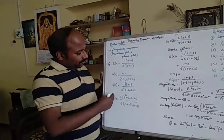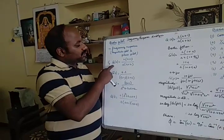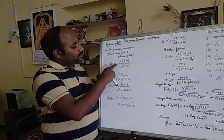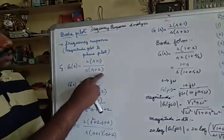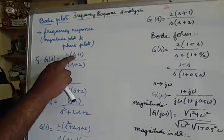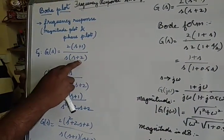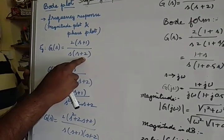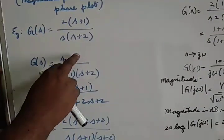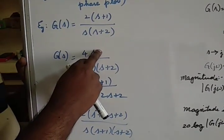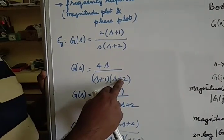We know some examples of an open loop transfer function G(s). G(s) is equal to 2 into (s+1) divided by s into (s+2). What are the things available here? We have a zero at minus 1, a pole at 0, and a pole at minus 2. In another transfer function we have a zero at 0, a pole at minus 1, and a pole at minus 2.